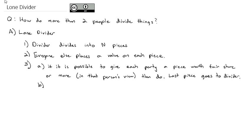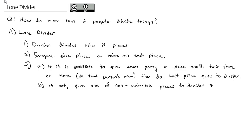The last piece left over goes to the lone divider. But that's not always possible. Sometimes we have some contested pieces — everybody wants piece one because everybody believes piece one is worth more. In that case, if it's not possible, give one of the non-contested pieces to the divider. Nobody else wants it, the divider says it's fair, and so the divider is happy. Then we repeat the process with the remaining parties.